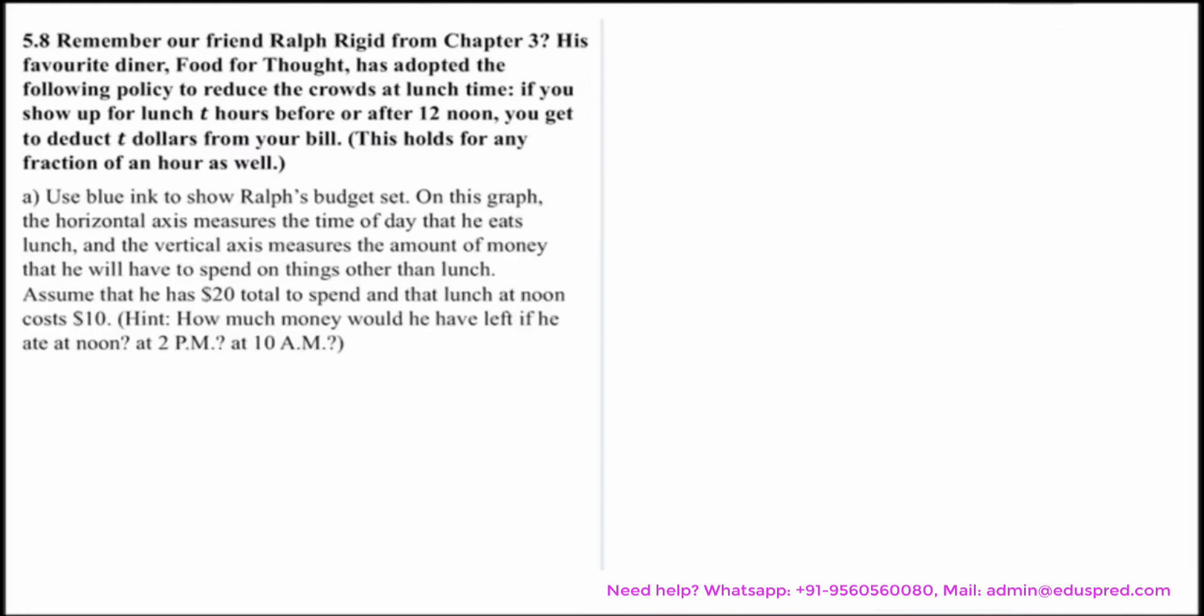With this information, we are asked to use blue ink to show Ralph's budget set on this graph. The horizontal axis measures the time of day he eats lunch, and the vertical axis measures the amount of money that he will have to spend on things other than lunch. Assume that he has $20 to spend and that lunch at noon costs $10. First, how much money would he have left if he ate at noon, at 2 PM, and at 10 AM?